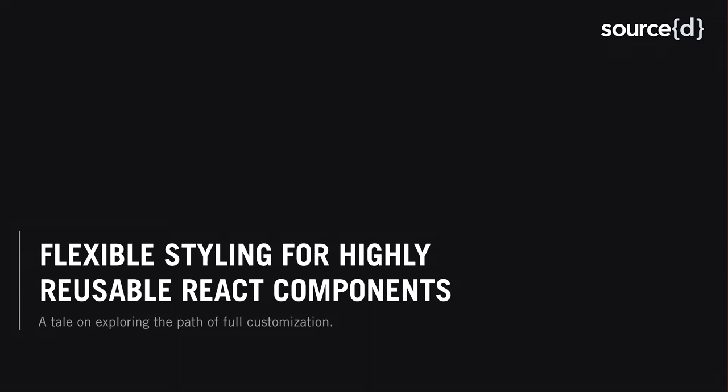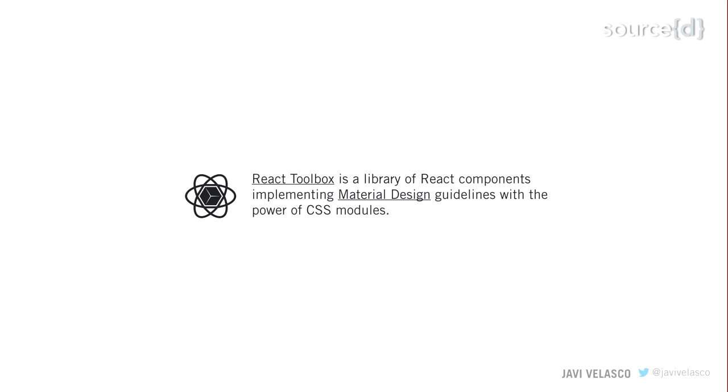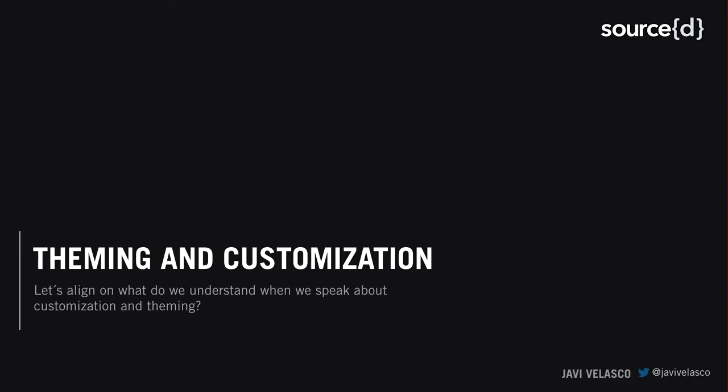This talk is called 'Flexible Styling for Highly Reusable React Components.' Essentially, it is a tale on exploring a path for full customization. My name is Javi Velasco — that's my Twitter handle. I work for a company called Audience, where we build powerful business insights tools. I'm also the author of React Toolbox, a popular library of React components implementing Material Design using CSS modules — it has almost 7,000 GitHub stars, is the second most relevant GitHub project in Spain, and is used by companies like Netflix.